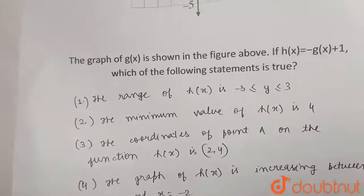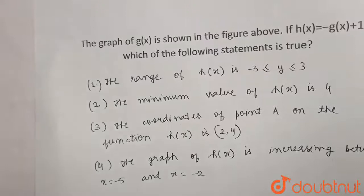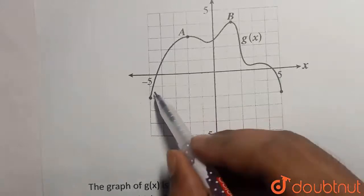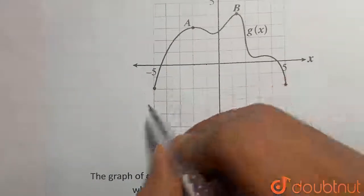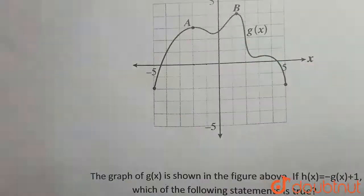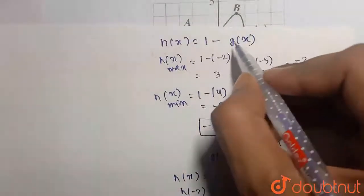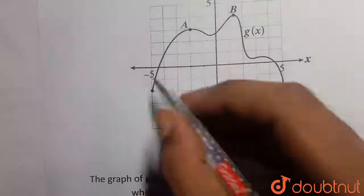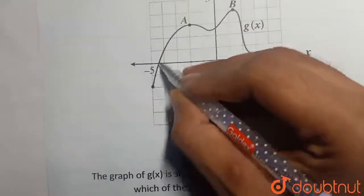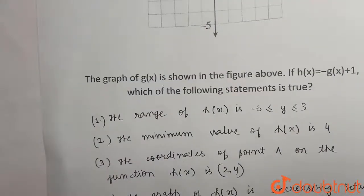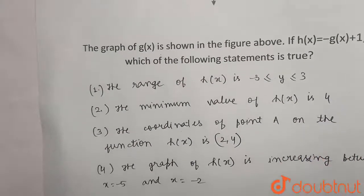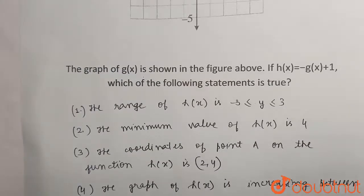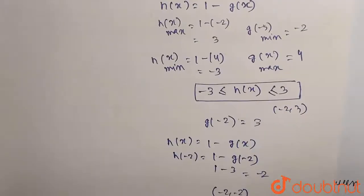The graph of h(x) is increasing between x equal to minus 5 and x equal to minus 2. What about the graph of g(x) between x equal to minus 5 and x equal to minus 2? The graph of g(x) is increasing in that interval, but as established, g(x) and h(x) are inversely proportional. When g(x) is increasing, h(x) will be decreasing. So between minus 5 and minus 2, the graph of g(x) is increasing, meaning h(x) will be decreasing. So the fourth option is also not true. Only option 1 is true — the range of h(x) is between minus 3 and 3.